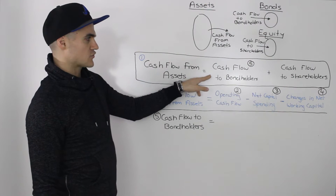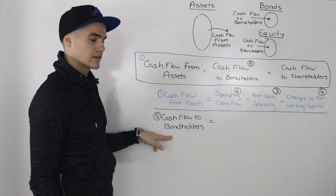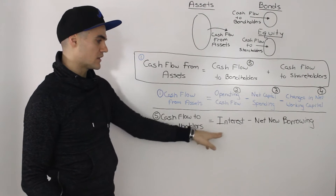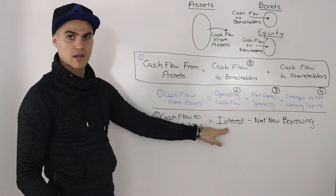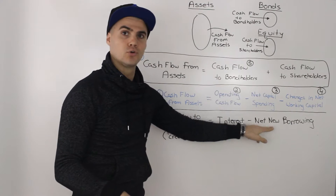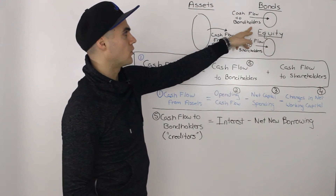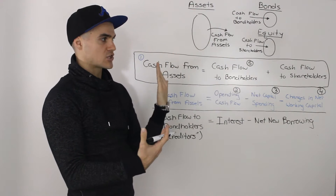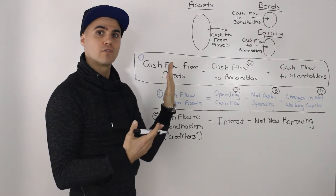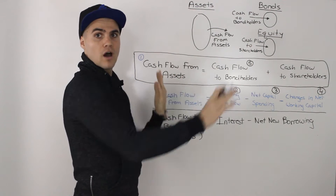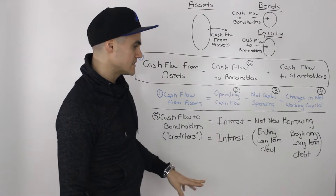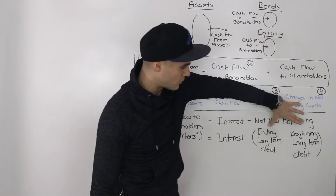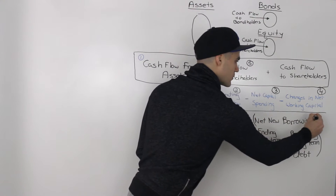Next, in the general formula, we're going to deal with the cash flow to bondholders. Cash flow to bondholders, or cash flow to creditors — creditors is just another name for bondholders — is equal to the interest that you pay the bondholders, and this figure can be taken from the income statement, minus net new borrowing. Net new borrowing is equal to your ending long-term debt minus your beginning long-term debt.